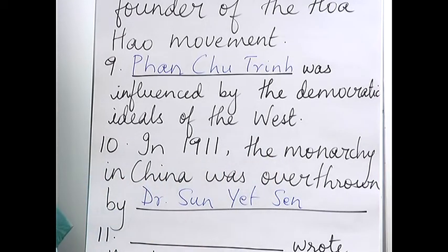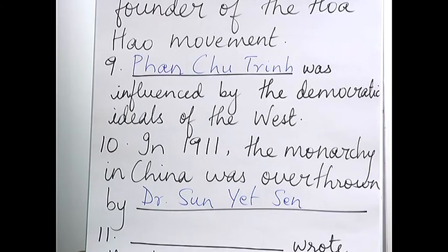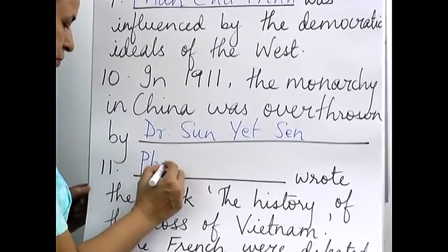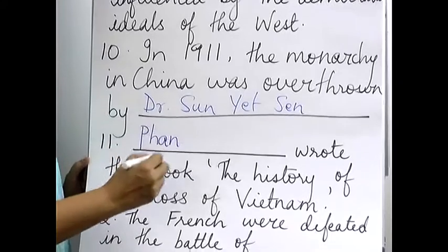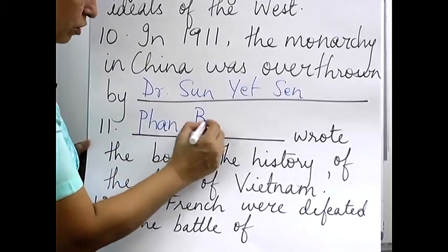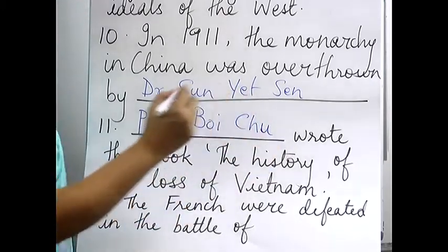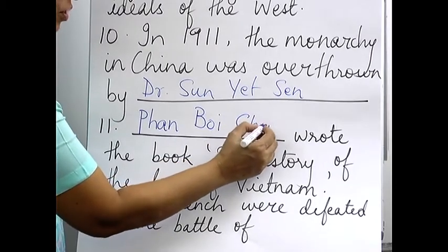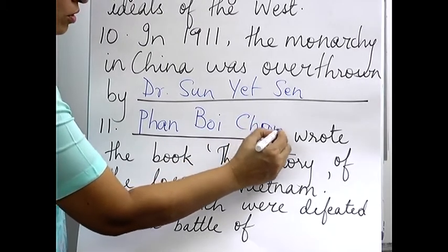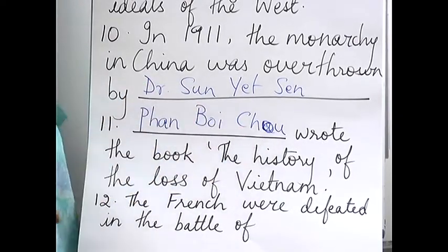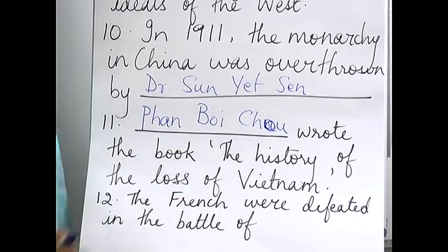There are three to four different ways that question can be asked. Eleventh: Phan Boi Chau — also written as Chau — wrote the book 'The History of the Loss of Vietnam.' In your textbook it is given as Chau, so you write Phan Boi Chau wrote the book.